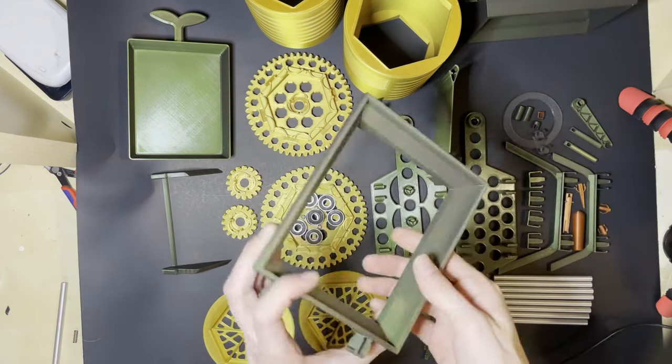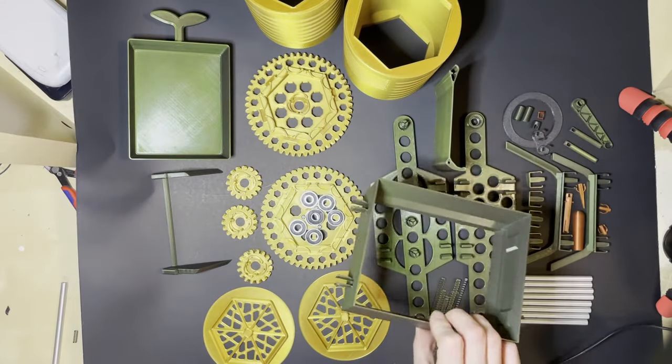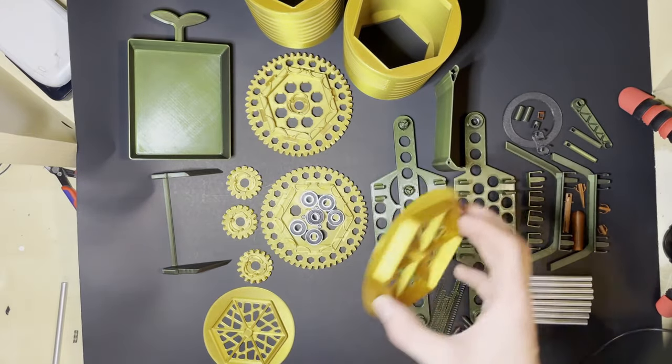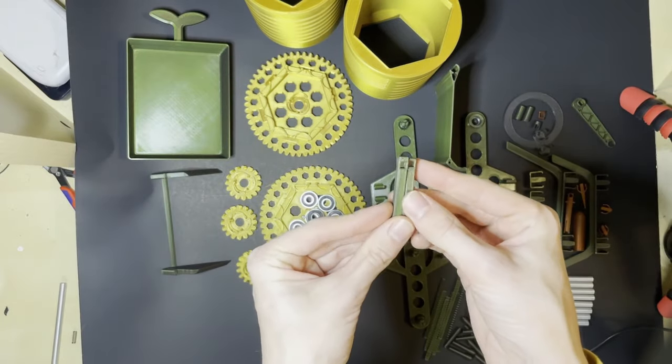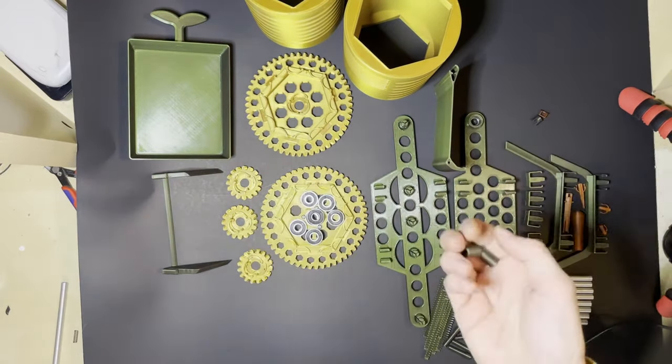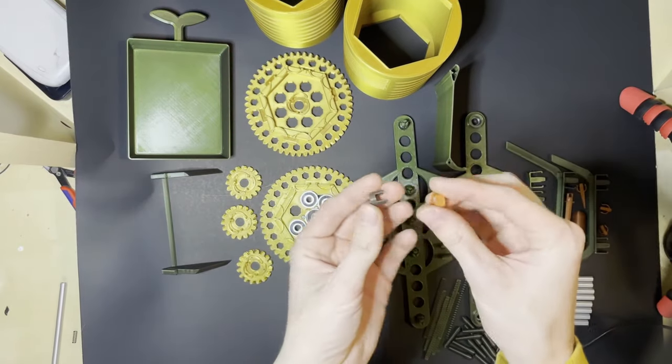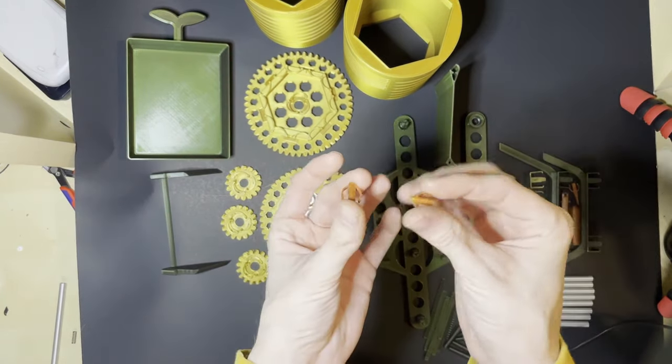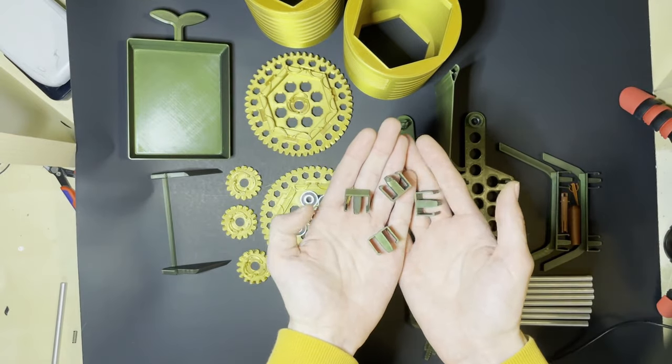This is the hopper lower. This is the hopper upper. These are end caps, you need two of these. There's a short and a long spline shaft. Crank handle, face plate. You need two spacers, these two clips, two omega clips.